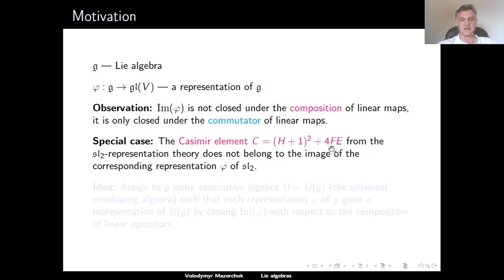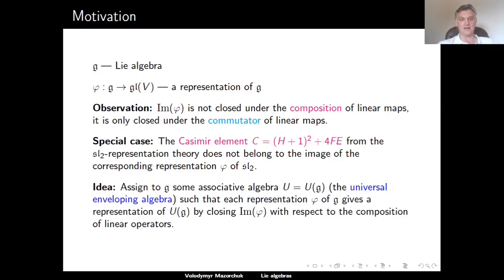So in the general case, the Casimir element does not belong to the image of the Lie algebra homomorphism phi which defines the corresponding representation of SL2. We need to find some different object which would contain this Casimir element C. Our idea is to assign to our Lie algebra G some associative algebra, called the universal enveloping algebra of G, usually denoted U(G), such that for each representation phi of G, we can extend this representation to a representation of U(G) consisting of all linear operators obtained by closing the image of phi with respect to composition.